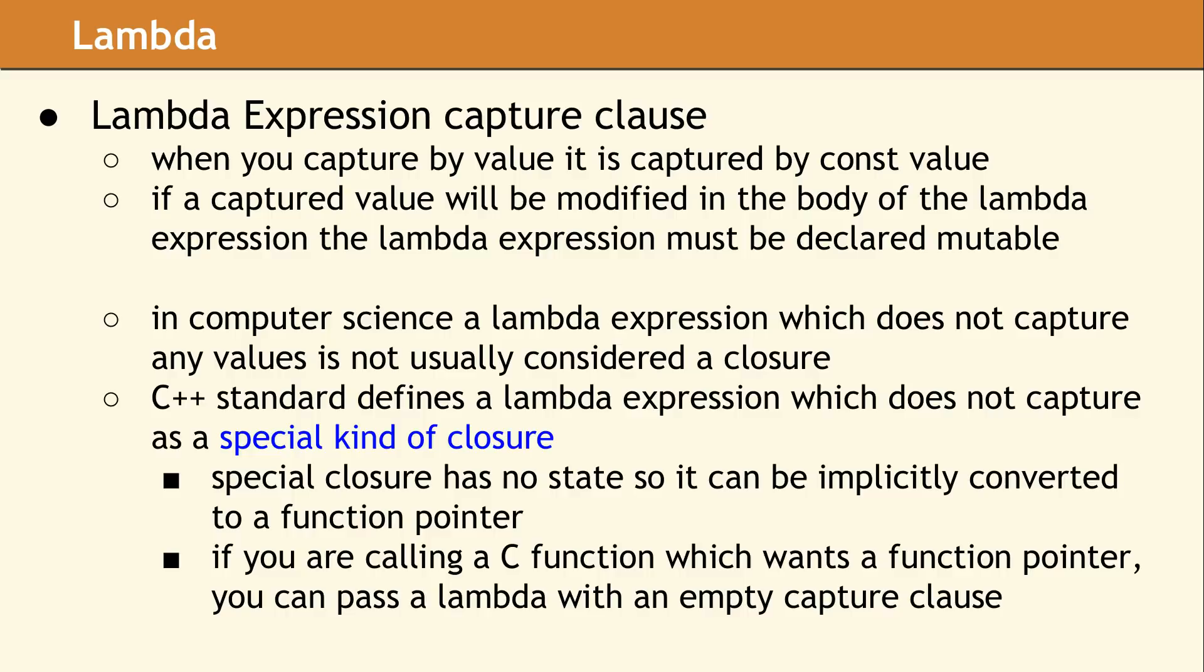The computer science definition of a closure disagrees slightly with the C++ standard. In computer science terms, a lambda which does not capture anything from the enclosing scope is not considered a closure. Since nothing was captured, there is no state. This means it consists only of code and can be considered as a function pointer. The C++ standard refers to all lambda expressions as closures. If there is nothing captured, it is simply called a special type of closure. This can be useful when calling legacy code or a C API which expects a function pointer. You can call the C function and pass a lambda expression which has no captures, and it will behave as if you passed a function pointer.